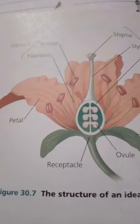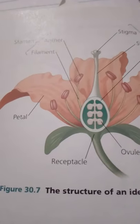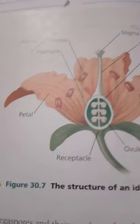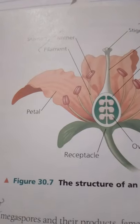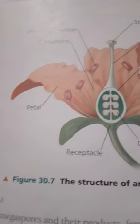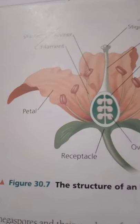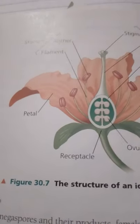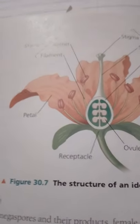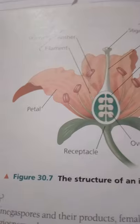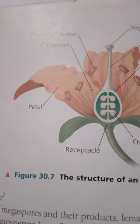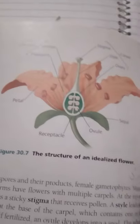Above the sepals are the petals, which are brightly colored in many flowers, attracting pollinators. Flowers that are wind-pollinated, however, generally lack brightly colored parts. The sepals and petals are sterile floral organs, meaning that they are not directly involved in reproduction.